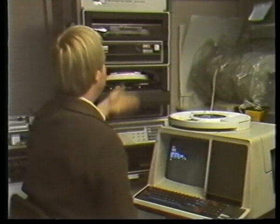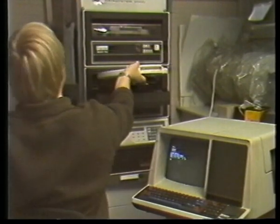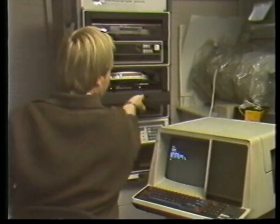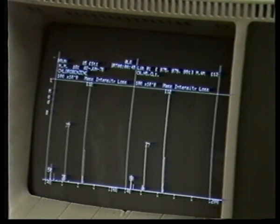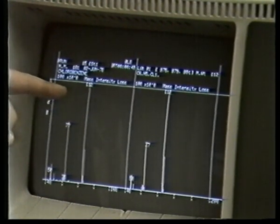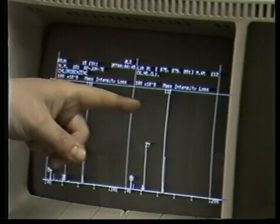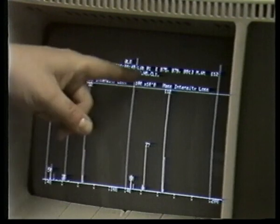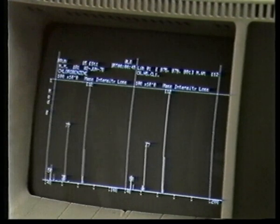It's possible to compare the output pattern with those of known compounds, which are kept in the computer's library, held on a computer disk. In this case, the spectrum of chlorobenzene is displayed on the left, and that of our sample on the right. The pattern is virtually identical. So, the substance we have been dealing with is now identified. It is chlorobenzene.